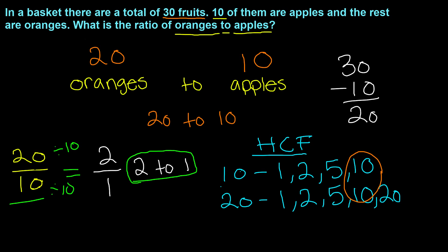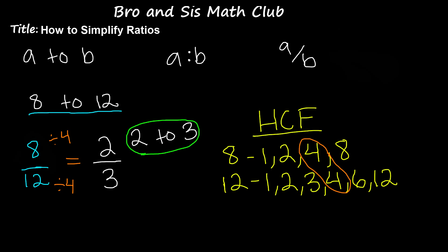Using the HCF method is one of the ways to simplify our ratios. As you can see in our first example, we have 8 and 12, and both of these are even numbers.